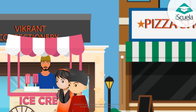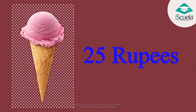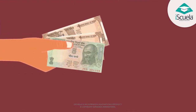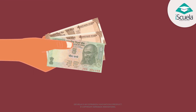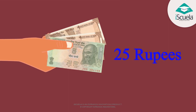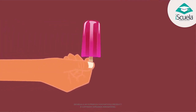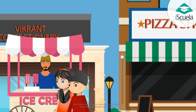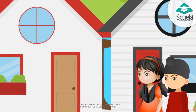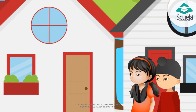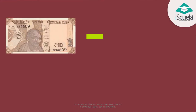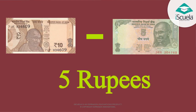I want an ice cream, Uncle. What is the cost of an ice cream? It costs 25 rupees. Currency notes of 10 rupees, 10 rupees and 5 rupees become 25 rupees. Please return me the balance of 5 rupees. Hey brother, how do you know that you would get 5 rupees back? Actually, I had subtracted 5 rupees from 10 rupees.